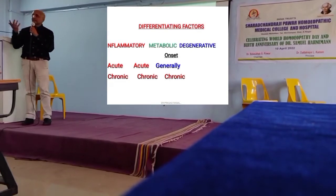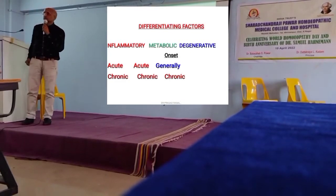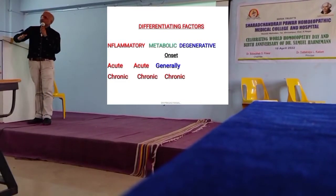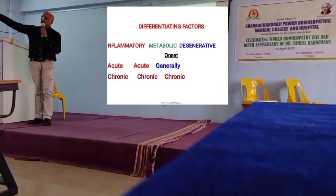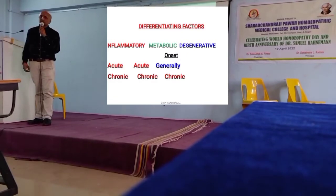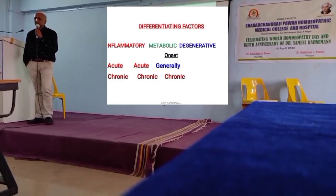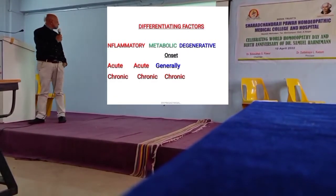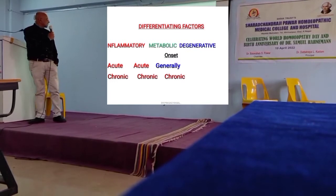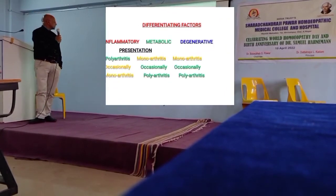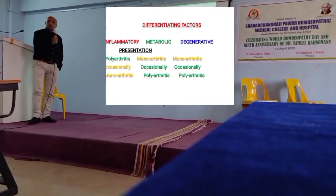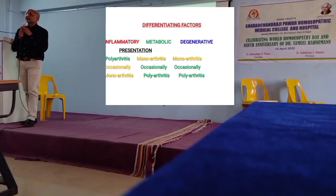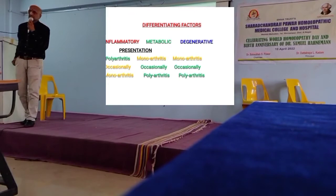Degenerative arthritis is not an acute condition - it is a chronic, long-standing, gradually developing process. That is why it presents as chronic degenerative arthritis. In rheumatoid arthritis, the first thing to note is that it is polyarthritis - meaning multiple joints are affected.